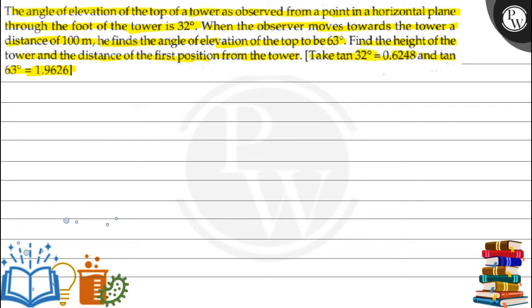The angle of elevation of the top of the tower is given as 32°. When the observer moves 100 meters towards the tower, the angle becomes 63°. We have to find the height of the tower and the distance of the first point from the tower.